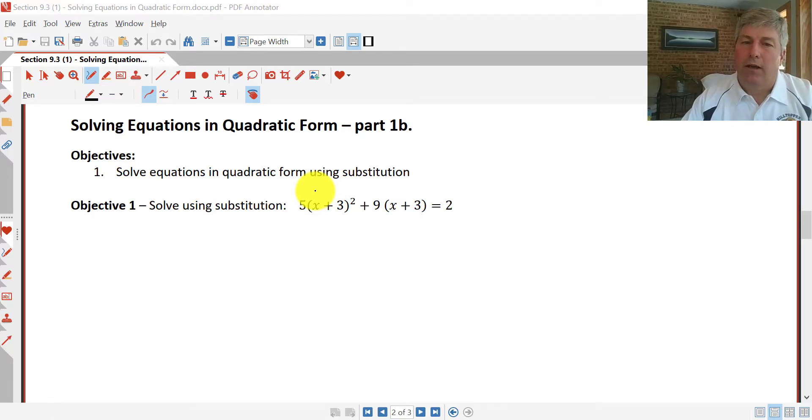What we're going to do here, instead of foiling all this out, we're going to substitute a different value for x plus 3 to make it easier to factor. We'll generally use the linear term in our samples to be our u. So in this case, we're going to let u equal x plus 3.